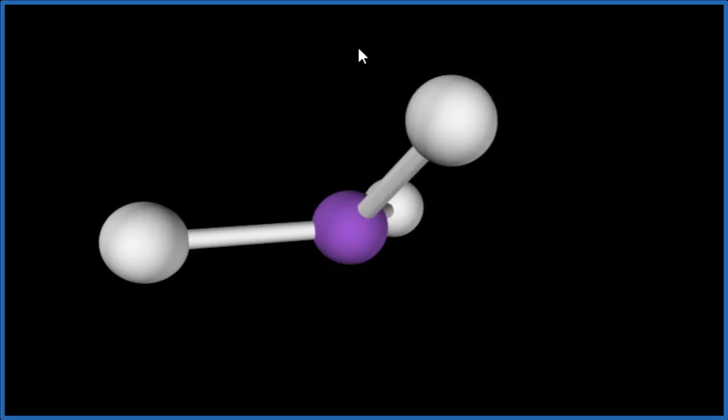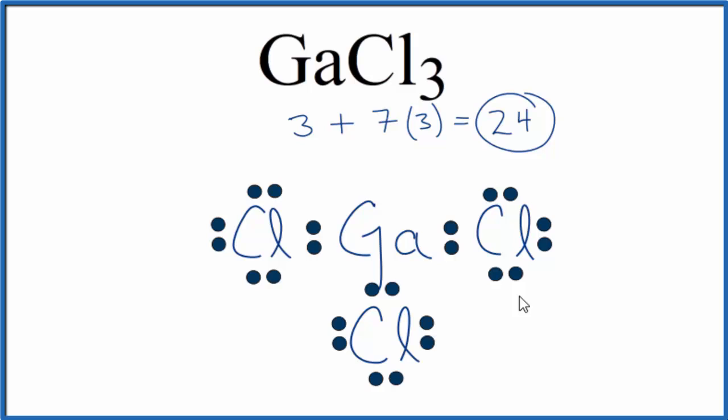Back to our Lewis structure, and there you have it. The Lewis structure for GaCl3, the molecular geometry, and the bond angles. This is Dr. B. Thanks for watching.